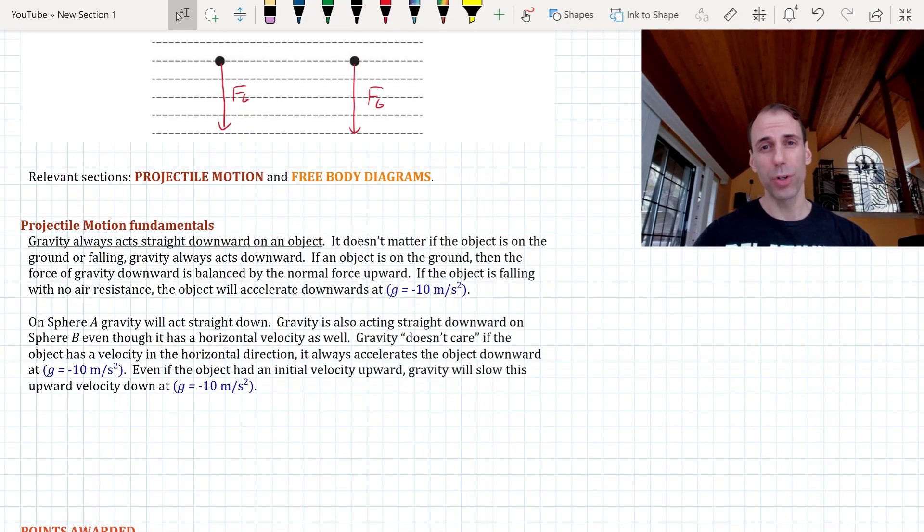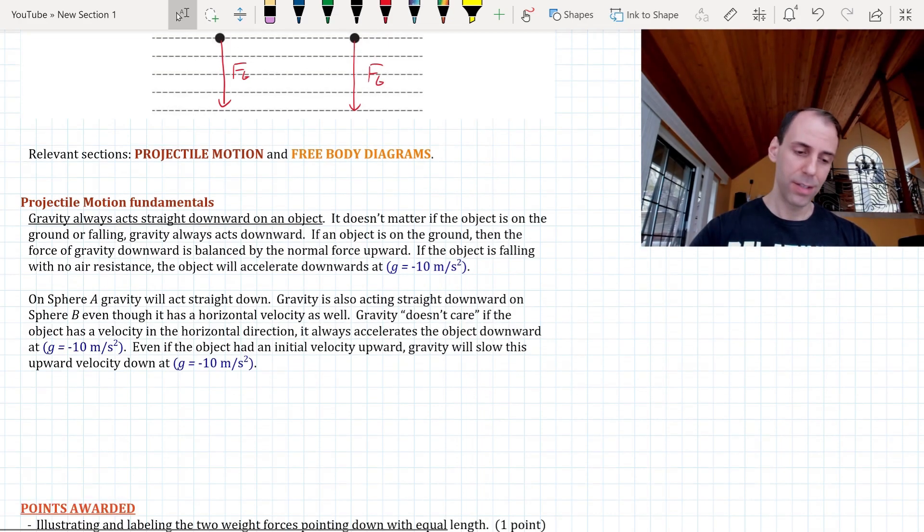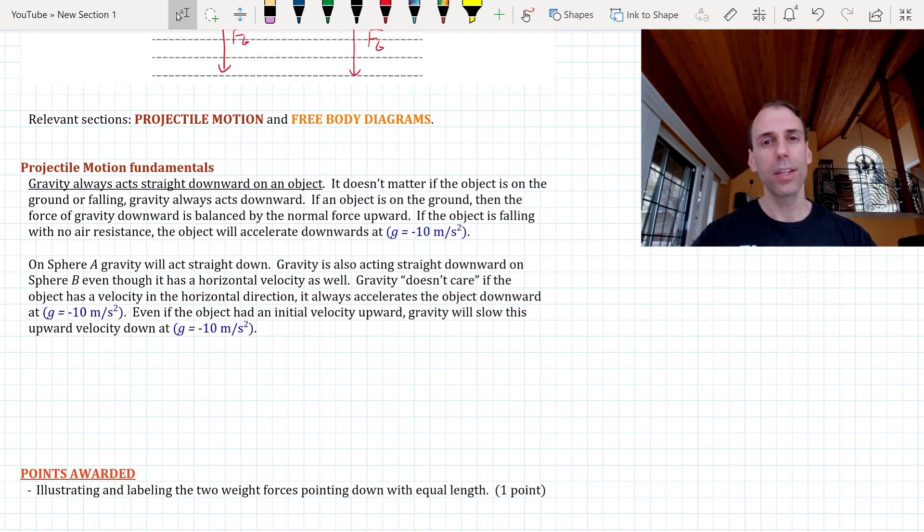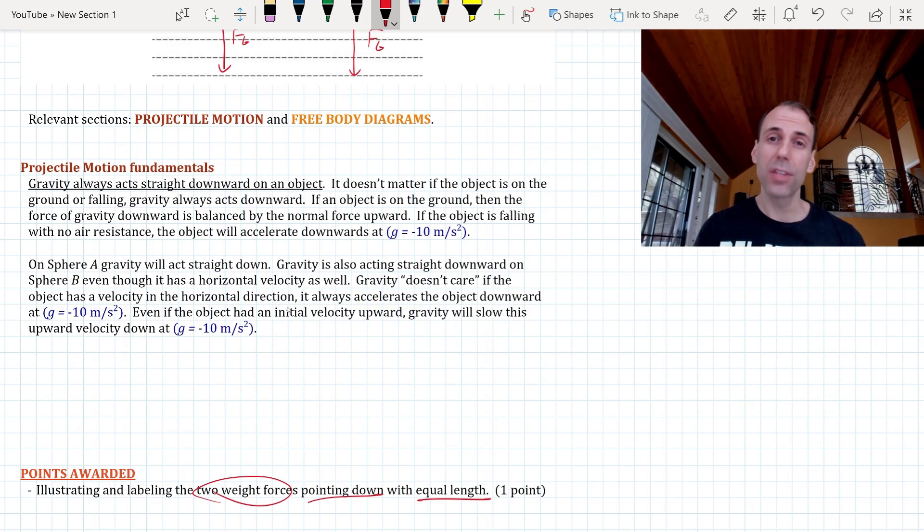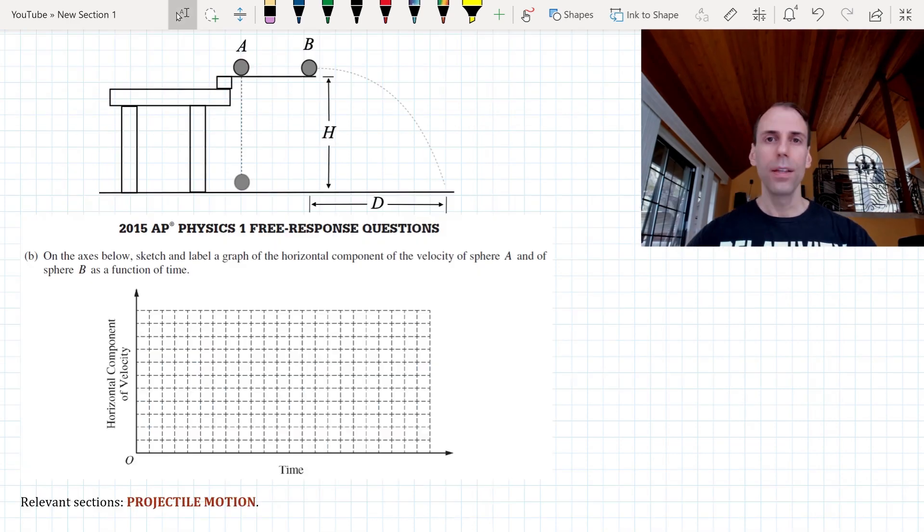Here's just some take-home points which you can pause and go through if you like. The full credit given for this problem is that you have to illustrate both weight forces pointing down with equal length. That is the only way you get full credit for this part. Any component of that missing constitutes zero points for this problem.